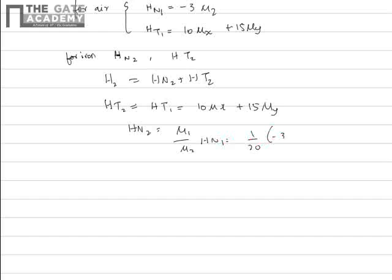So that is minus 0.15μ_z. H_2 equals H_N2 plus H_T2, so that would be 10μ_x plus 15μ_y minus 0.15μ_z. Now we have to find out the magnetic flux density.